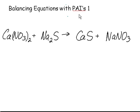This trick is called balancing equations with PAIs, or polyatomic ions. What we need to do is look for polyatomic ions which appear on both sides of the equation.